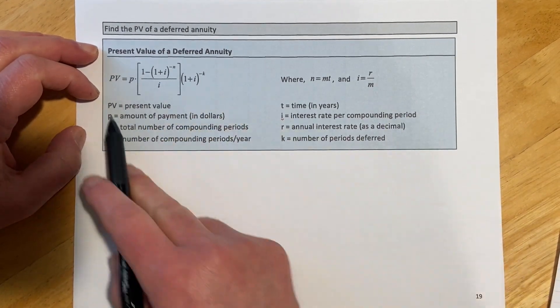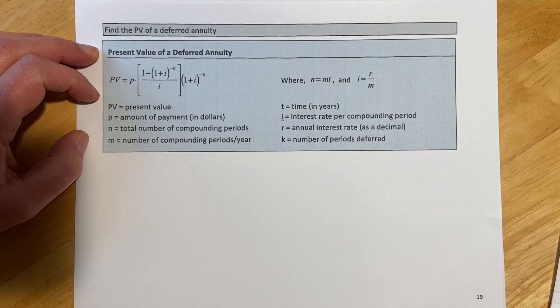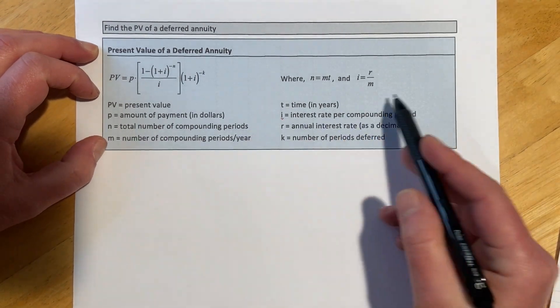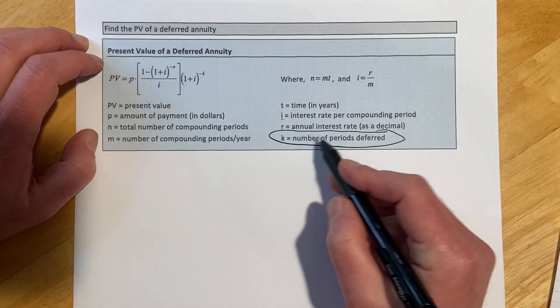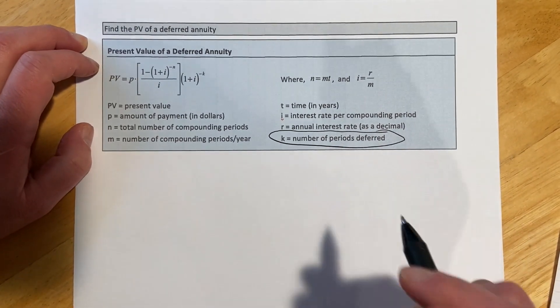So our formula has pretty much all the same players we've been using for these last few sections. The one additional one right here is going to be K, and so this is the number of periods that it is deferred.